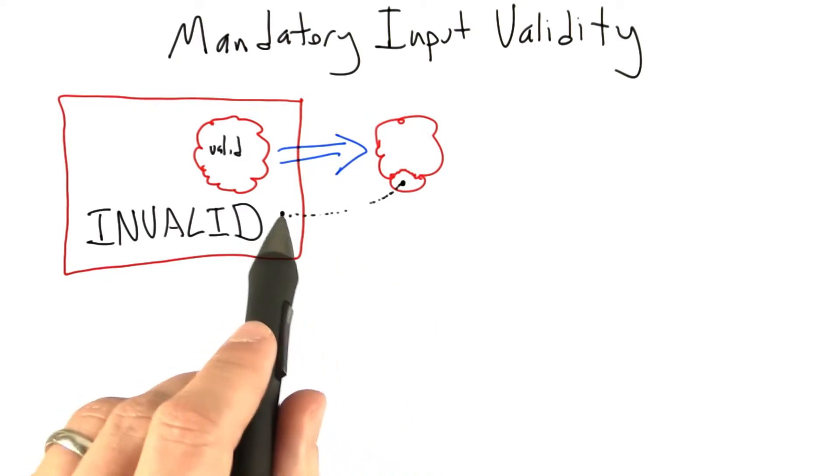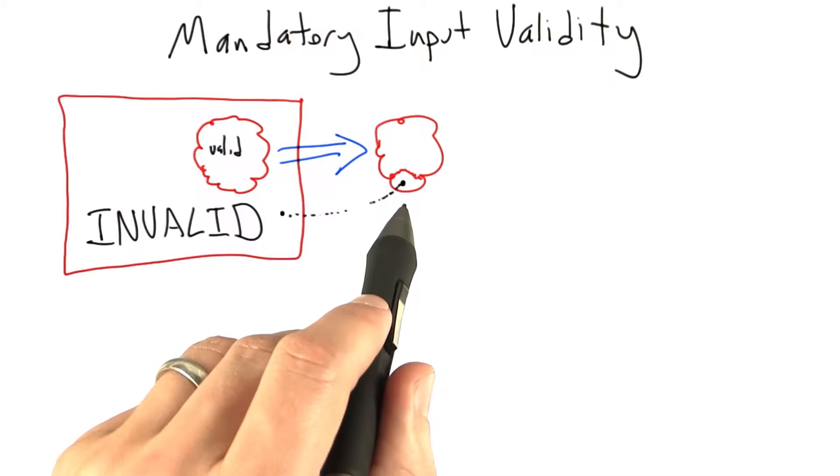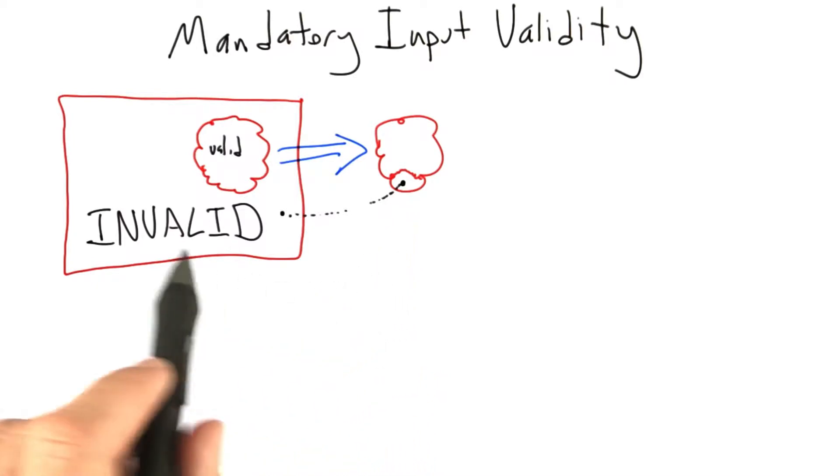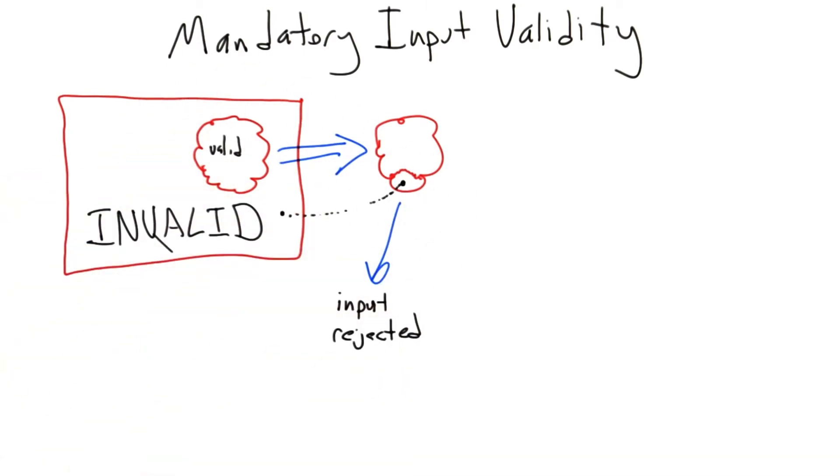What happened was when we generated invalid inputs, which is extremely easy to do, they were executing a boring part of the software under test and getting mapped to input rejection errors. Those rejections of invalid input were basically forcing us to generate another value and submit it and see what happens.